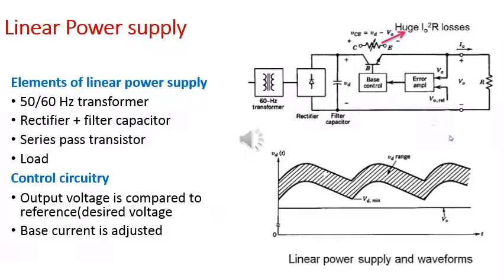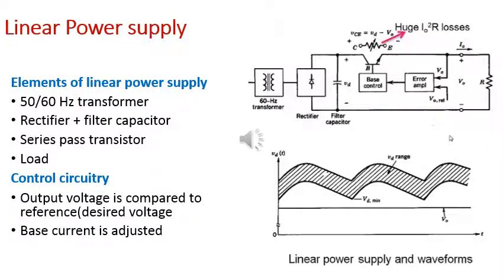In linear power supplies, a series pass transistor is used to regulate the output voltage. The transistor is operated in the linear region to provide the regulated output voltage V_out at the load side. In these power supplies, the control circuit is used where the output voltage is compared to the desired output voltage, and thereby the output voltage is regulated by adjusting the base current of the transistor.